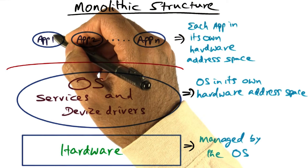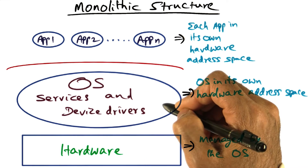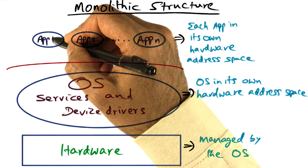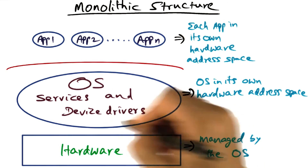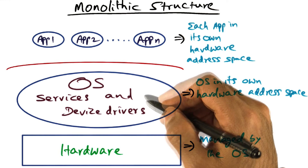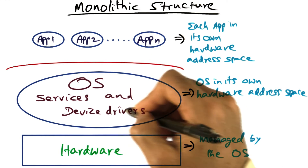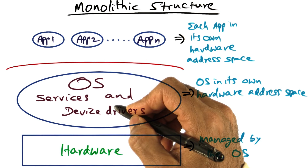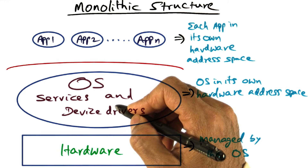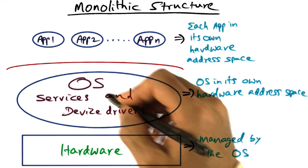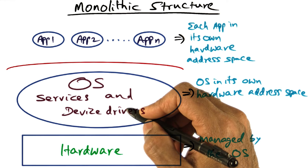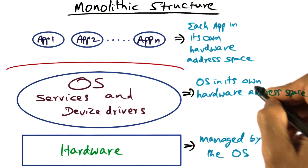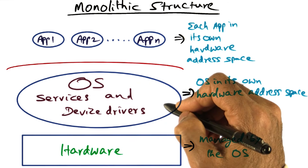That is, when an application needs any system service, we switch from the hardware address space representing this particular application into the hardware address space of the operating system, and execute the system code that provides the service expected by the application. For example, accessing a file from the hard disk, dynamic allocation of more memory that an application may want, or sending a message on the network — all of these things are done within the confines of the address space of the operating system itself.